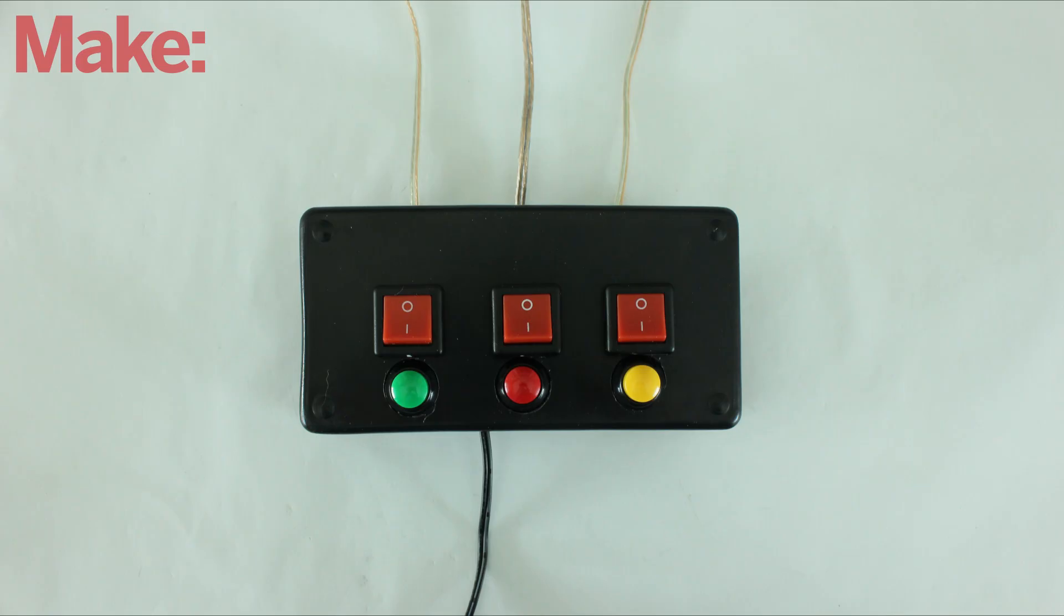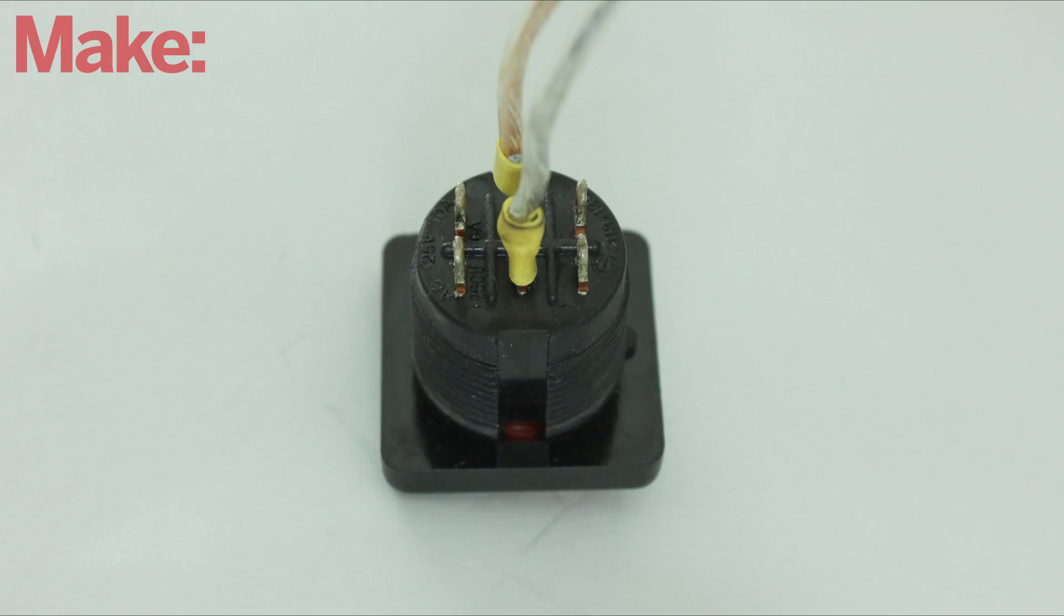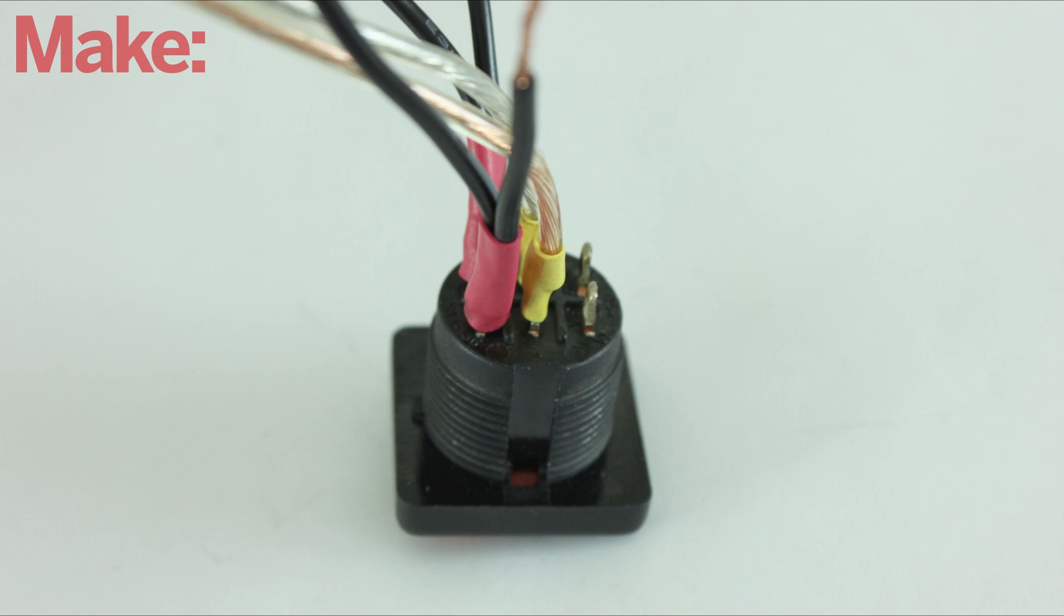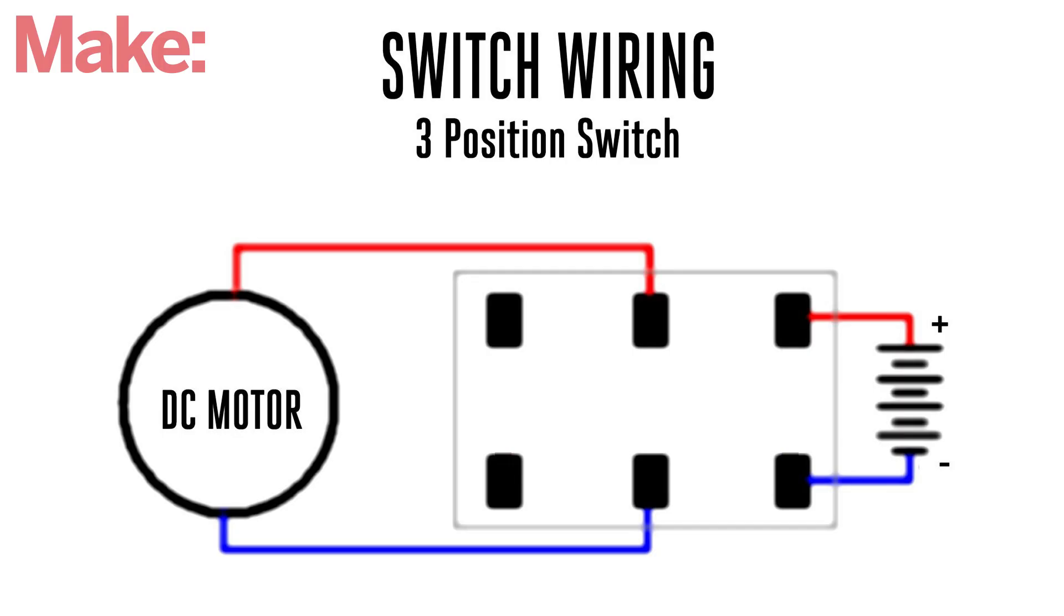Now you're ready to set up the switches. Start by connecting the motor to the center pins of a double pull double throw switch. Then connect the power supply to one set of terminals on either side. Take small jumper wires and connect these terminals to the terminals on the opposite side, but reverse them. This will cause the motor to change directions when the switch is flipped.